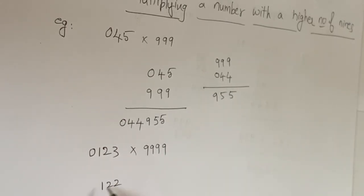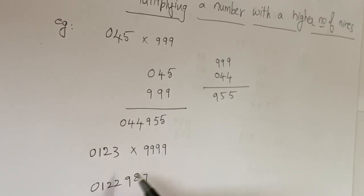This number should be subtracted from nine. So here we put nine. Nine minus one is eight, nine minus two is seven, nine minus two is seven. So this is the answer.